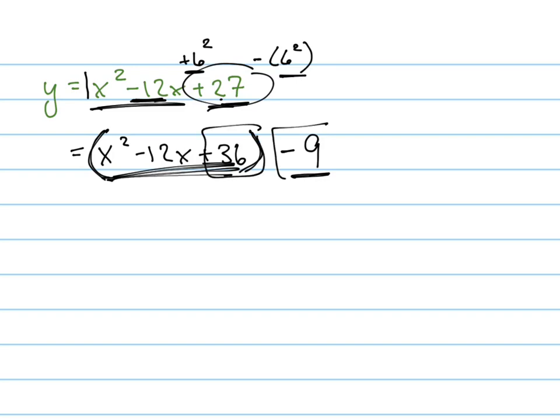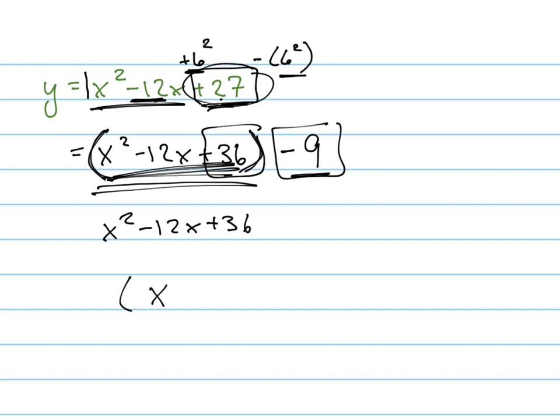What's 36 minus 9? 36 minus 9, that's 27. That's 27, which is right here. So all I'm doing is rewriting this equation. And I'm doing it in a special way because now this right here, x squared minus 12x plus 36 is going to factor into x minus 6 squared. And then x minus 6 squared, that equals x minus 6 squared minus 9.